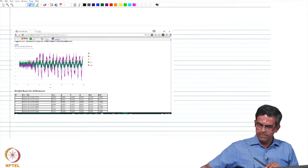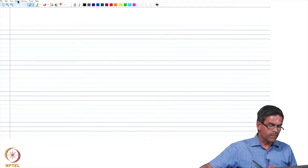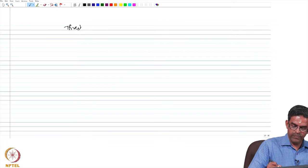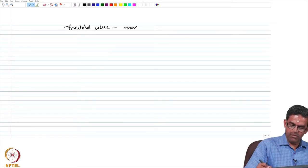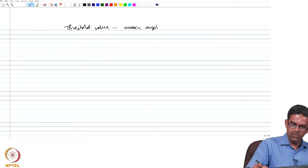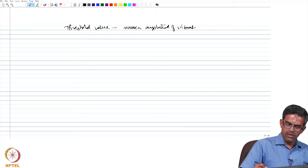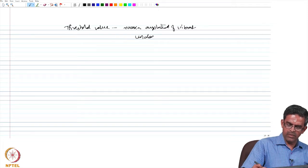In this case the threshold value refers to the maximum amplitude of vibration in the undamaged scenario. That is what we have taken.